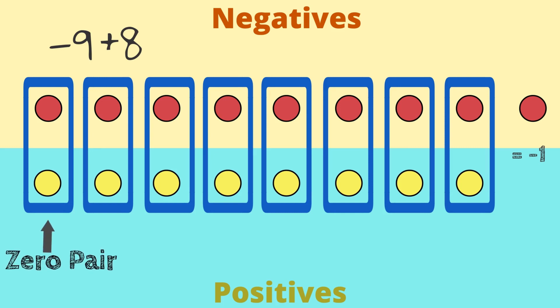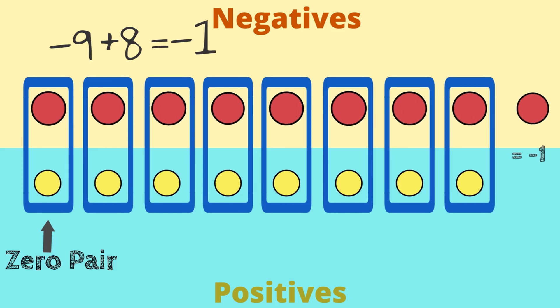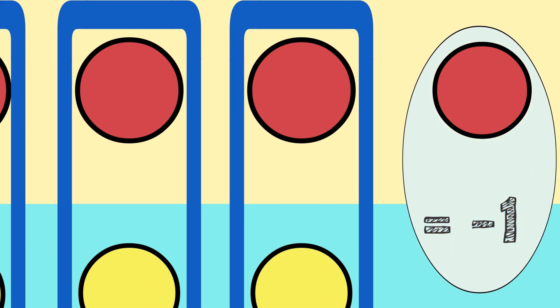What is left is one red, or one negative counter. Negative 9 plus positive 8 is equal to negative 1.